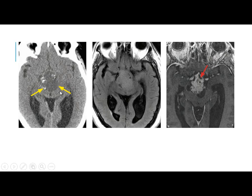On axial CT, there is a well-defined suprasellar hyper-attenuated mass with calcification. On FLAIR, there is a well-defined suprasellar mass. T1 with contrast shows heterogeneous enhancement with a cystic component.